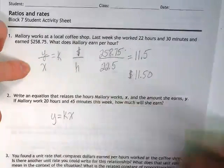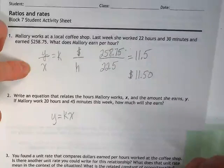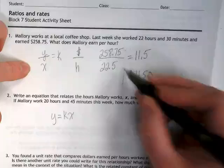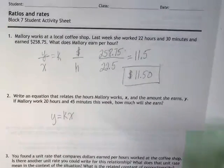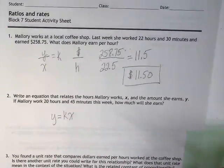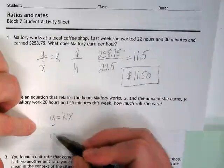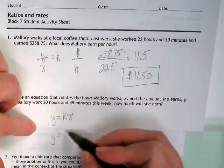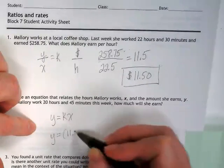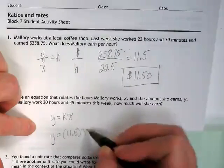Y equals X. 11. What is her K? This is her constant. That's her amount per hour that she makes. That's her constant, right? So we could rewrite this as Y is equal to 11.5 times X.